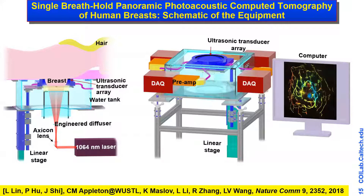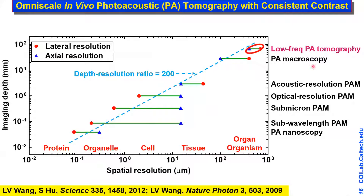We scaled up the system for human breast imaging. The aperture is 22 centimeters in diameter to accommodate most breasts. The breast is slightly deformed to stabilize it and minimize the penetration requirement for light. The system operates at multiple centimeters penetration with hundreds of microns resolution, enabling omniscale imaging — from whole human organs or entire small animals down to tissue, cell, and organelle levels.